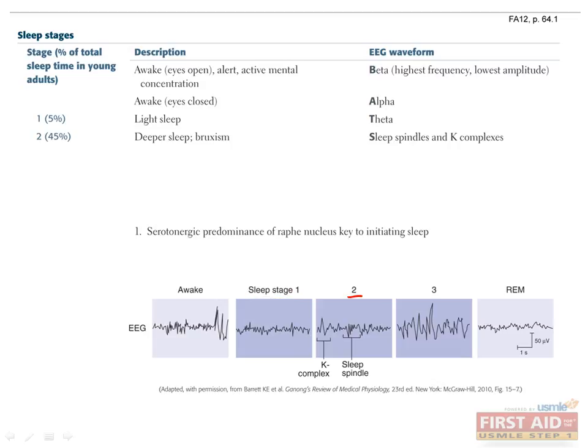In the second stage of sleep, comprising about 45% of total sleep time in young adults, you see sleep spindles and K-complexes on the EEG waveform. This stage of sleep is when grinding of the teeth and clenching of the jaw occurs, referred to as bruxism.